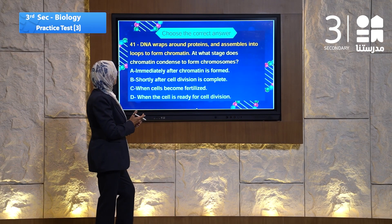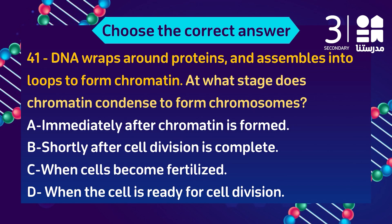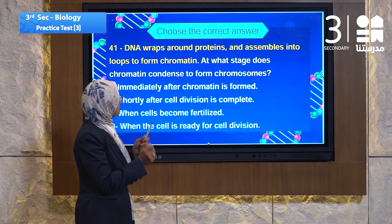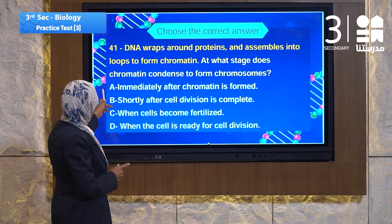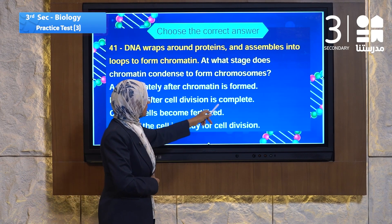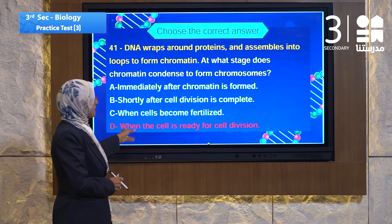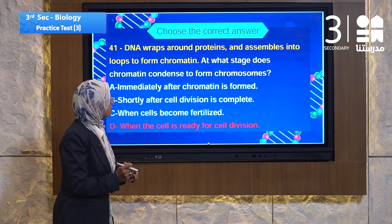Question 41: DNA wrapped around proteins assembles into loops to form chromatin. At what stage does chromatin condense to form a chromosome? The choices are: A, after chromatin is formed; B, shortly after cell division is completed; C, when the cell becomes fertilized; D, when the cell is ready for cell division. The answer is D — when the cell is ready for cell division, the chromatin condenses to form a chromosome.